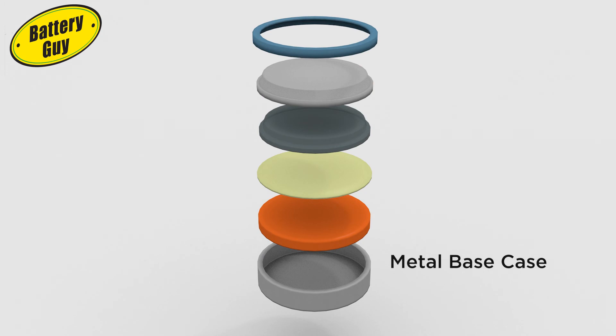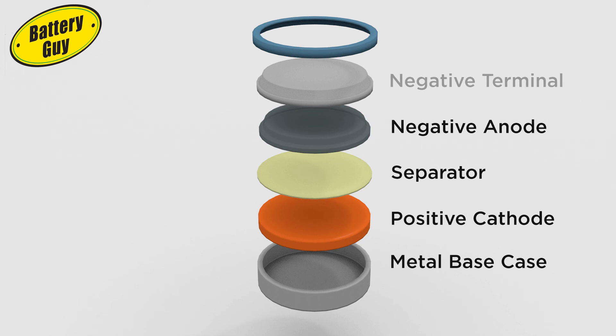A metal base case in direct contact with the positive cathode material. An ion-conducting paper separator soaked in alkaline electrolyte. An anode material in direct contact with the negative terminal. Both sealed in a gasket to avoid contact with the positive charged case.